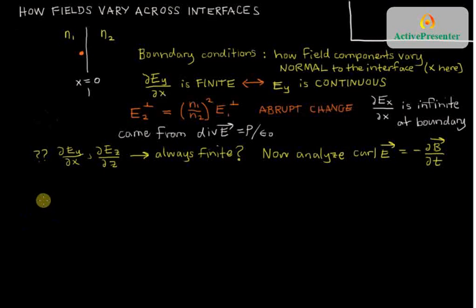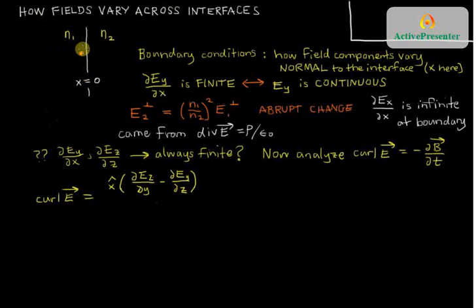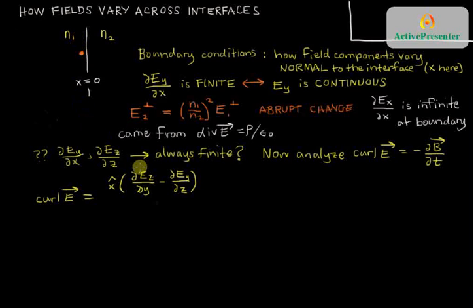The curl of E has three components. The x-hat component of the curl has two derivatives with respect to y and z. Within a single region, whether a plane wave is coming in or reflecting, there are no sudden changes in refractive index, and we don't expect any sudden changes in the electric field components as we move around within one material. Since these are y and z derivatives, they don't cross the boundary, so both of these derivatives are finite.